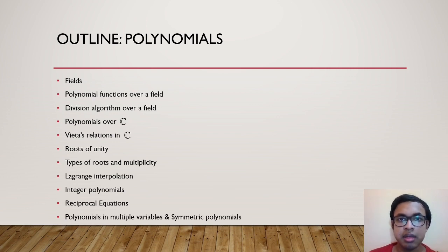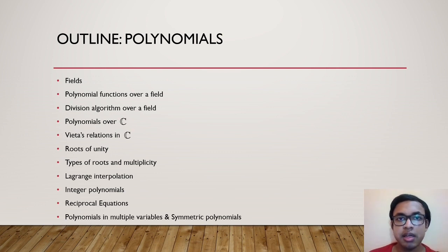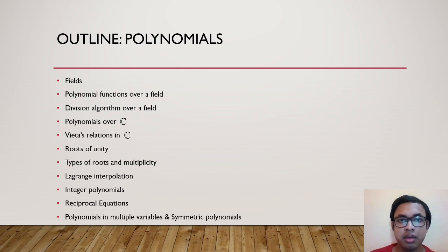We will restrict our attention to complex numbers and look at polynomials and their properties. We will move on to Vieta's relations in C, which are the relations between roots and coefficients of polynomials over C. Next we will deal with roots of unity, that is solutions of x^n = 1, and then types of roots and their multiplicity. Finally we will cover special topics like Lagrange interpolation, integer polynomials, reciprocal equations, and polynomials in multiple variables including symmetric polynomials.